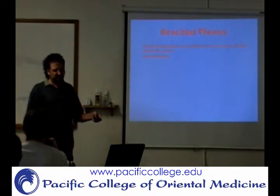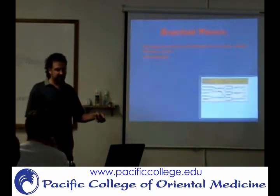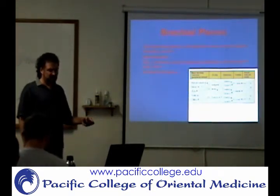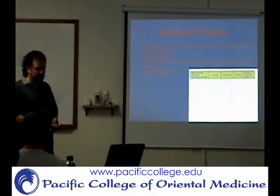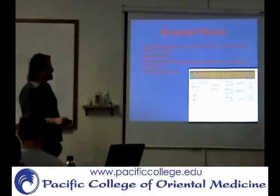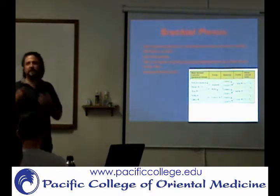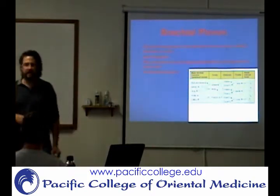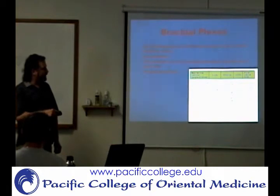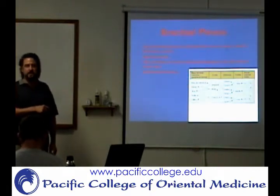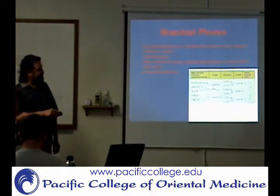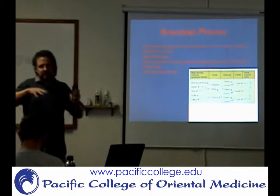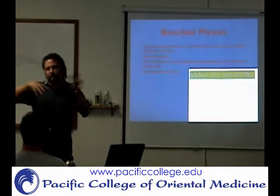You have nerve roots, trunks, divisions, cords, and branches. What's more clinically significant is the nerve roots — so if you're talking about disc herniations and nerve root levels, that's going to be dermatomes and myotomes. And then at the other end you have specific named peripheral nerves. Most of what we're going to talk about is those two ends. It's not so critical in the in-between — just understand it's like mixing and matching, like going on and off a bunch of freeway on-ramps and off-ramps.